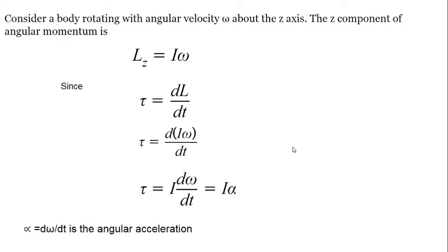Consider a body rotating with angular velocity omega about the z-axis. The z-component of angular momentum is conserved and is given by L_z equals I times omega. We can also see that torque is the rate of change of angular momentum, so torque equals dL by dt.